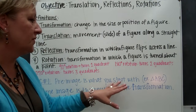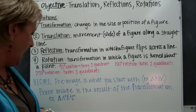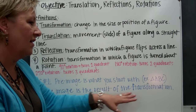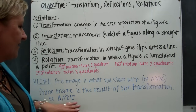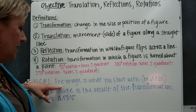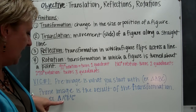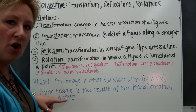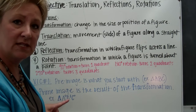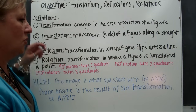Pre-image is what you start with. For example, if I have a triangle ABC, I'm going to have a prime image, and it is the result of a transformation. So if triangle ABC is my original pre-image, my prime image is going to be triangle A-prime, B-prime, C-prime. If there's more than one hash mark, it means the figure has been transformed more than once.